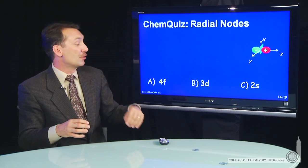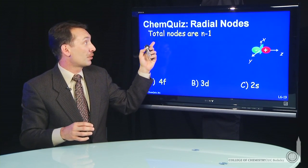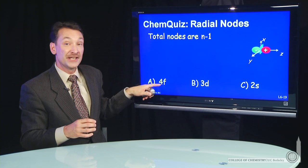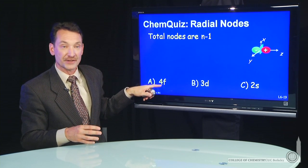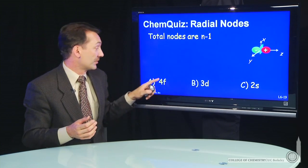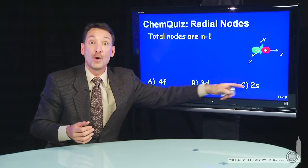So let's look at the nodes for this case. The total number of nodes are n minus 1. So the total number of nodes here are 3, 4 minus 1, or 2, 3 minus 1, or 1. So there's three nodes here, two nodes here, one node here.